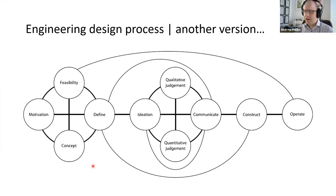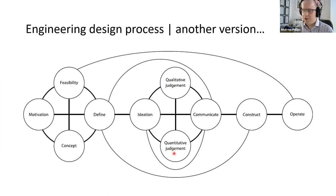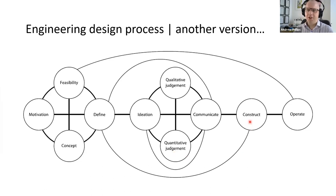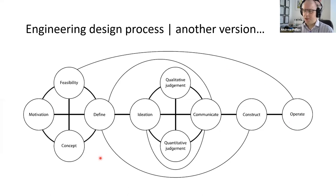We introduce a diagram — anybody who saw Will Dubin's presentation yesterday will recognize it — that has echoes of the Engineering Council's double diamond design process. We have an initial stage covering motivation, feasibility, concept, and beginning to define the problem. We then have a stage with ideation, communication, qualitative and quantitative judgment, reducing that chaos to something we can deal with. In civil engineering we generally have a construct phase, and hopefully a retrofit rather than always constructing new. Finally, we have an operate phase, and between all these phases there are clear opportunities for learning and feedback loops.